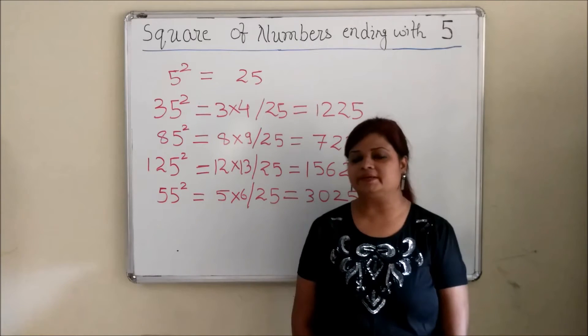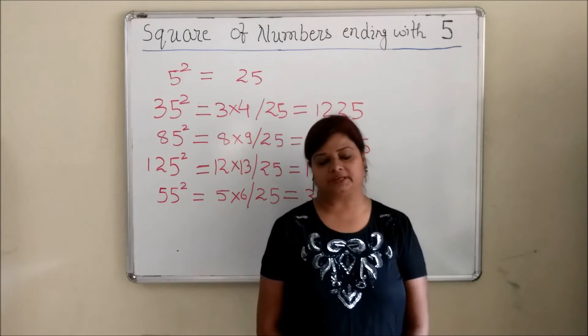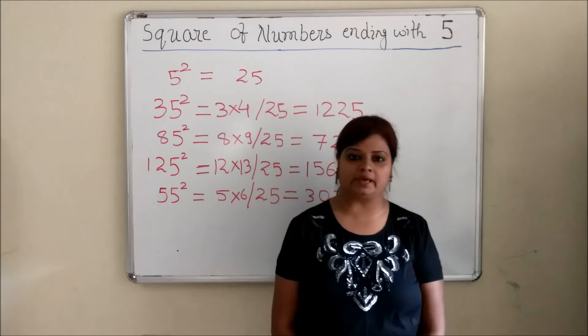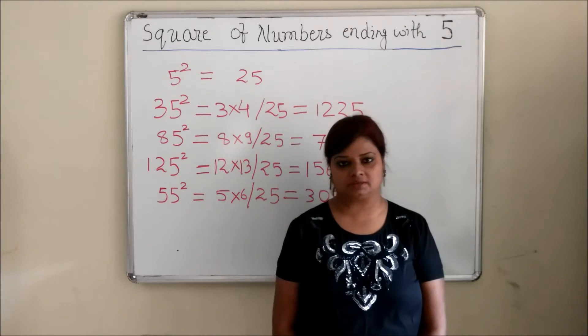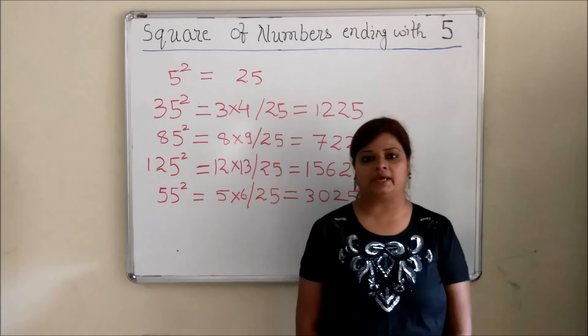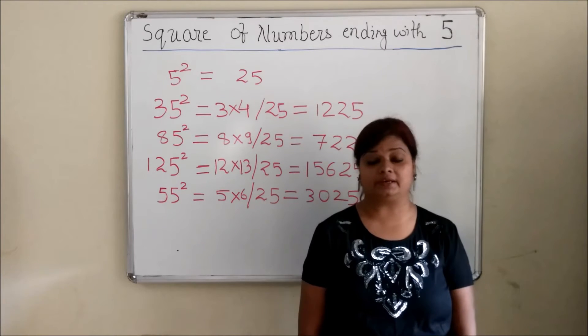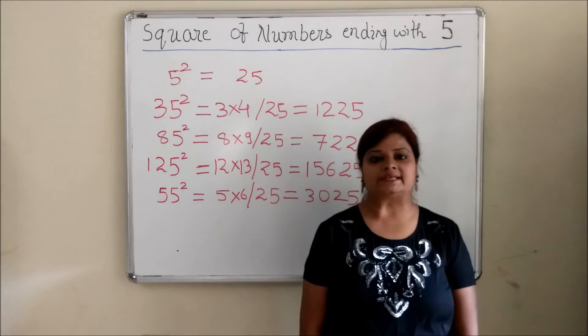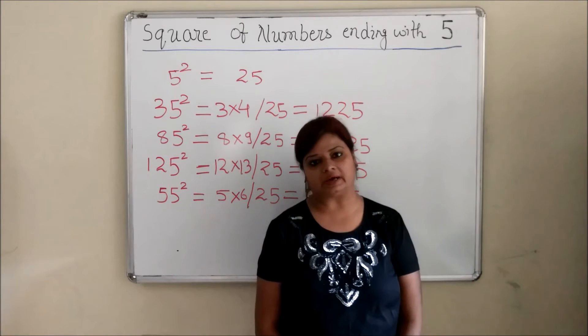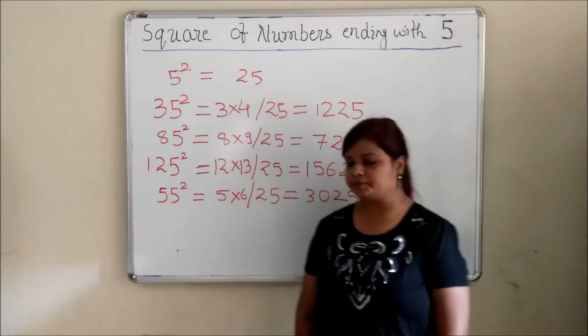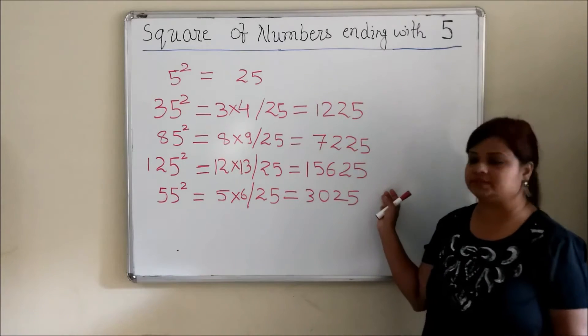Today I will be explaining certain specific techniques which you can apply for doing a faster calculation. One of these techniques, which is very simple, is square of numbers ending with 5. This is what I have done on the board you can see.